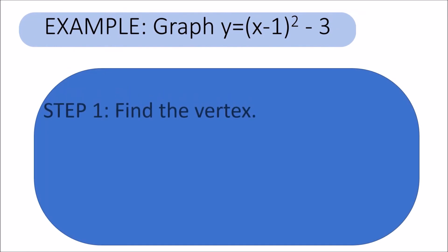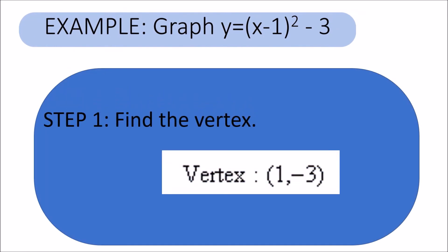Example number 2, graph y = (x - 1)² - 3. Step 1, find the vertex. Since the equation is in vertex form, the vertex will be at the point (h,k).